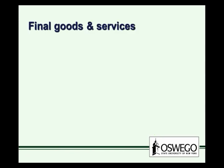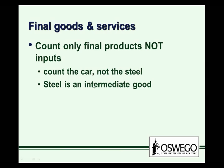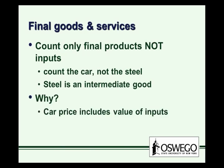Also, we're looking at final goods and services — final products, not the inputs. We count the car produced in the United States, but not the steel produced in the United States that makes the car, because steel is an intermediate good. If we counted both the steel and the car, we'd be double counting. The car price already includes the value of all the inputs that went into it, so we're looking at final goods and services.